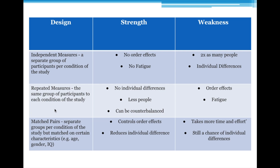A repeated measures design is where all of your participants do all of the conditions of the study. So this is where you've got the same group of participants taking part in all the different conditions. An example is a study about running speed and whether listening to music improved it. They got participants to run with music first and tested their speed over 400 metres, then got them to run without music and looked at the difference.